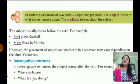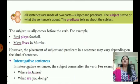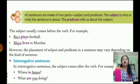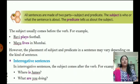However, the placement of subject and predicate in a sentence may vary depending on the kind of sentence. In interrogative sentences, the subject comes after the verb. For example, 'Where is James?' — 'is' is the helping verb and 'James' comes after it. 'What are you doing?' — 'are' is the helping verb and 'you' comes after it. So 'James' and 'you' are the subjects, and 'is' and 'are' are the verbs placed before the subject.